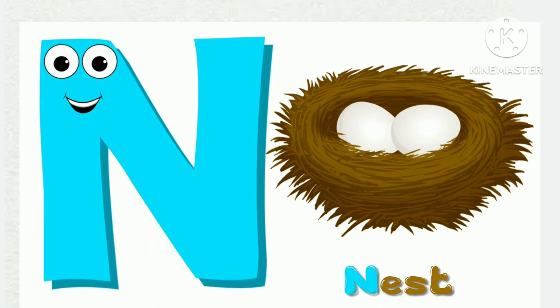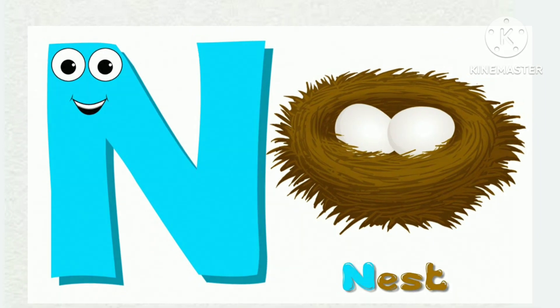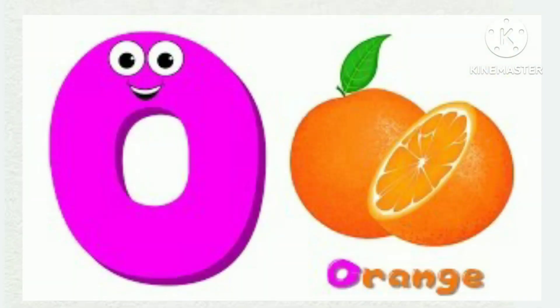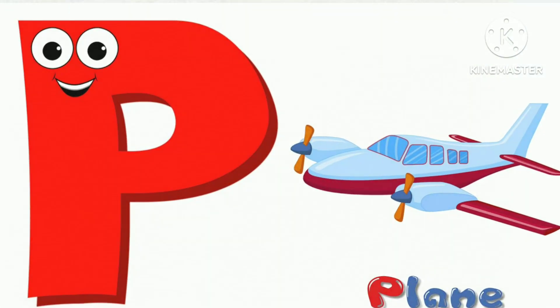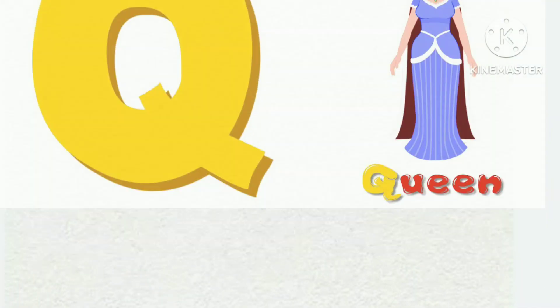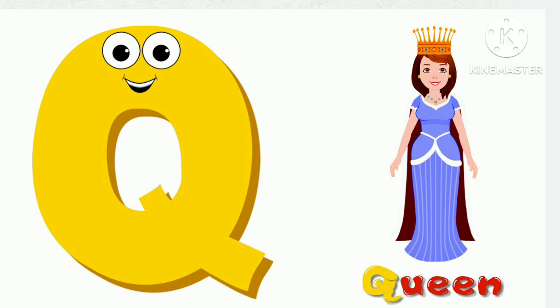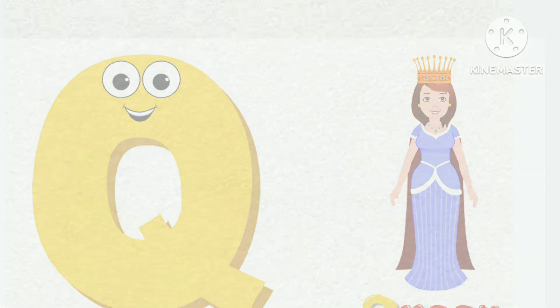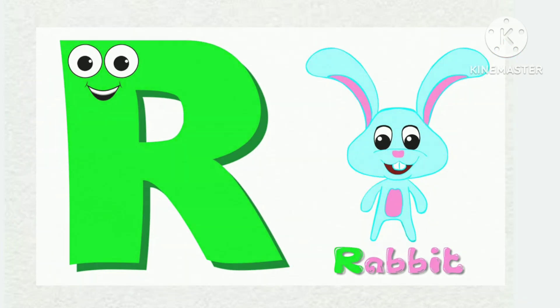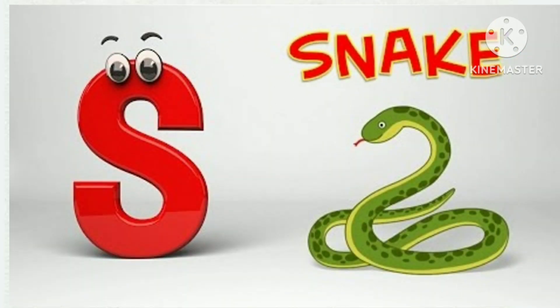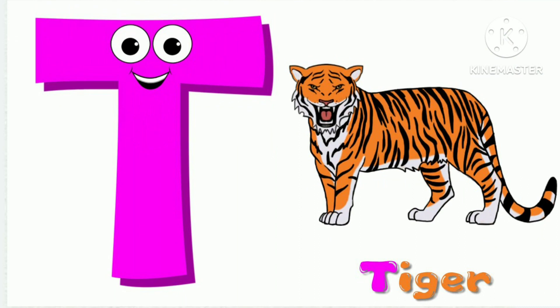N for Nest, O for Orange, B for Plain, Q for Queen, R for Rabbit, S for Snake.